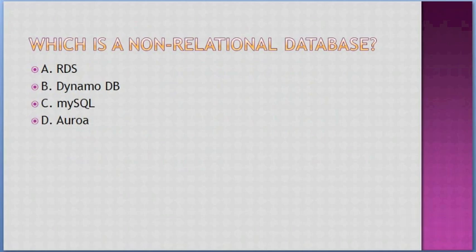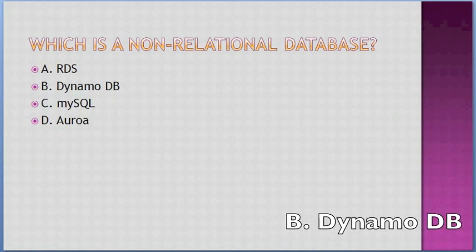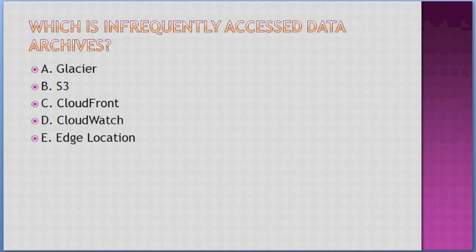Which is a non-relational database? Options: A. RDS, B. DynamoDB, C. MySQL, D. Aurora. Answer: B — DynamoDB. Which is used for infrequently accessed data archives? Options: A. Glacier, B. S3, C. CloudFront, D. CloudWatch, E. Edge locations. Answer: A — Glacier.